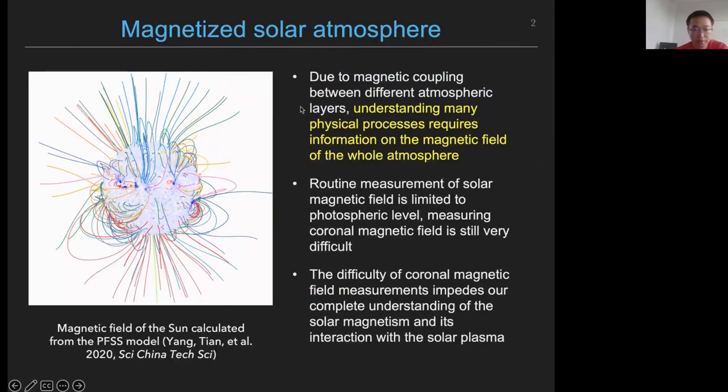We know that the Sun is a magnetized star, and its magnetic field plays a critical role in shaping the atmosphere. Due to the magnetic coupling between different atmospheric layers, understanding many physical processes such as the corona heating problem and the solar eruption mechanisms requires information on the magnetic field of the entire solar atmosphere.